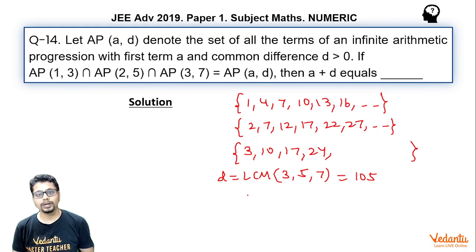Now what about A? One way to find A which is essentially the first common term between these three sequences is to write the terms as long as you come across a common term, the first common term between these three sequences.